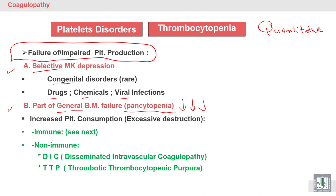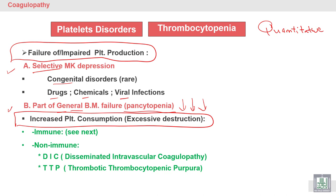Another cause of thrombocytopenia is increase in platelet consumption or destruction — called excessive destruction. It may be immune or non-immune. Immune causes will be discussed later. Non-immune causes include two very important diseases also discussed later.